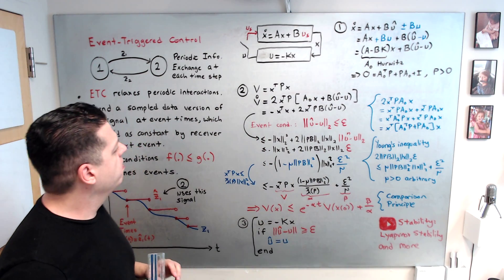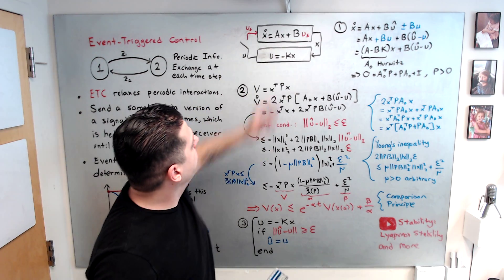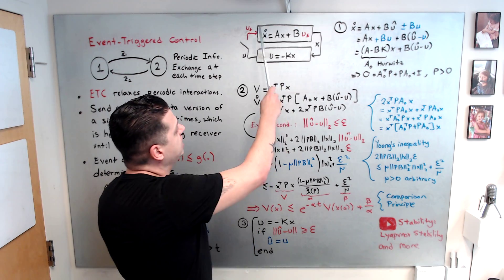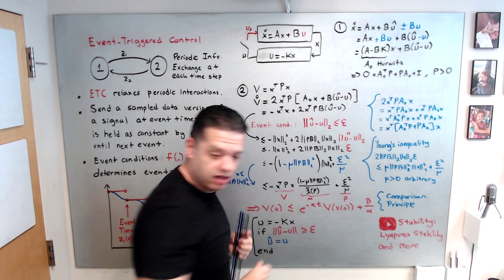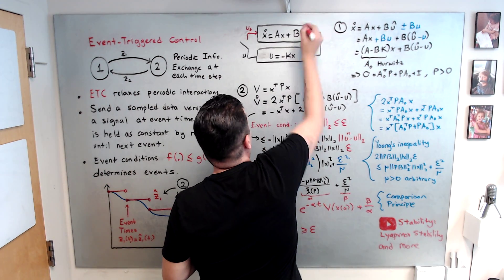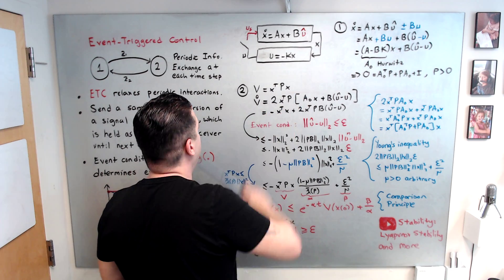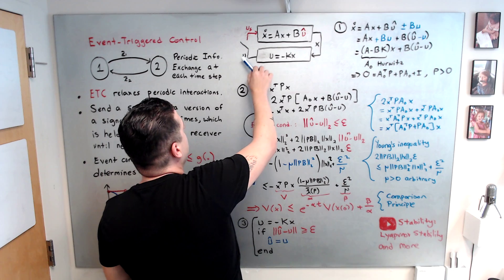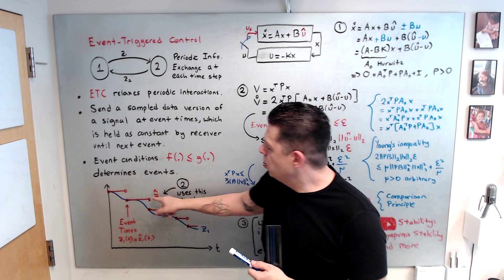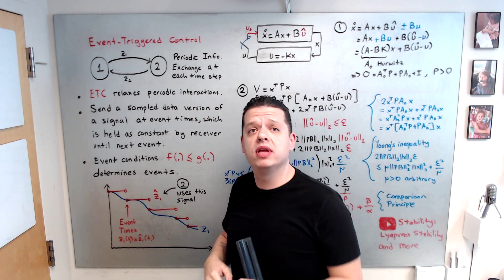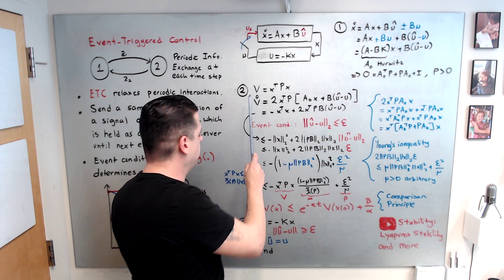Let's focus on a basic control problem to understand the theory. We want to control a linear system: x-dot equals Ax plus Bu. Instead of applying u continuously, we apply u-hat, the sampled-data or event-triggered control signal. The goal is to make u-hat equal to u only at event times, so that u-hat drives the system without needing to periodically communicate with it. There are three steps: finding the closed-loop system, stability analysis, and implementation.